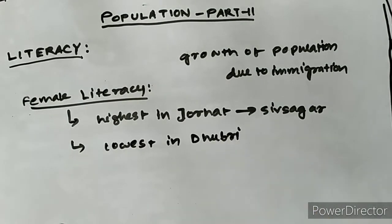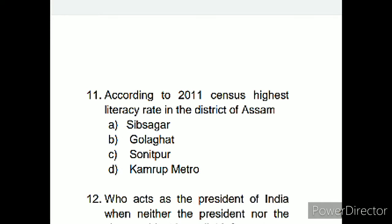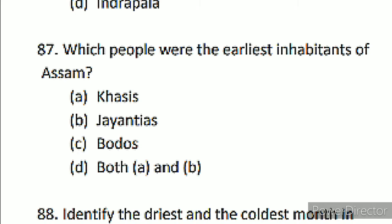APSCA recently launched a sample paper with questions on population of Assam. One question asks: according to the 2011 census, which district of Assam has the highest literacy rate? The options given include Jorhat and Sivsagar. The correct answer is Jorhat.